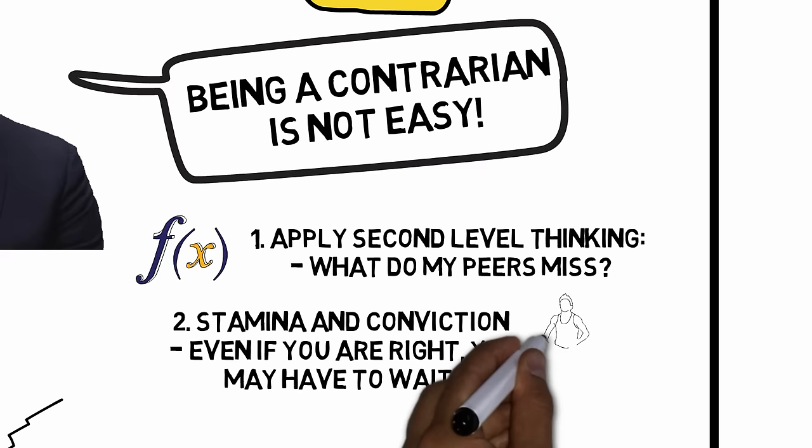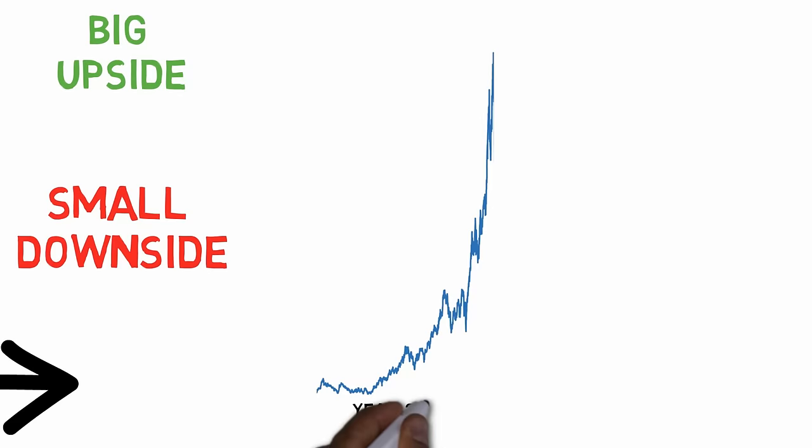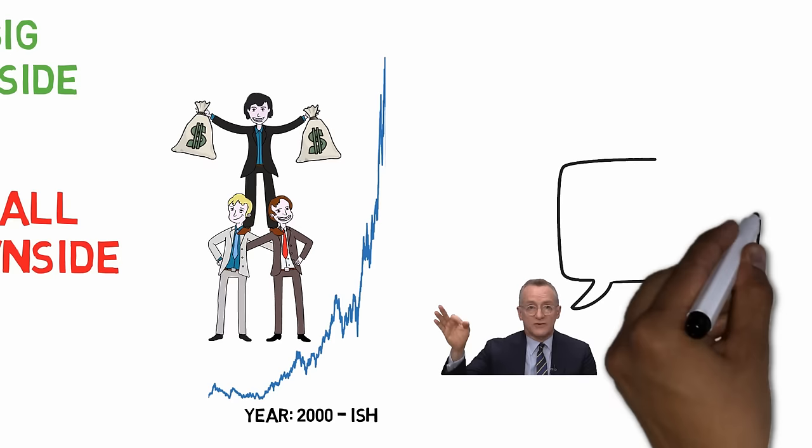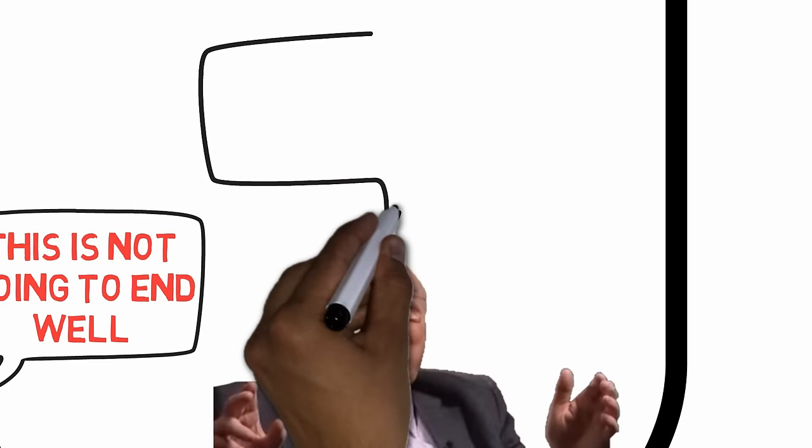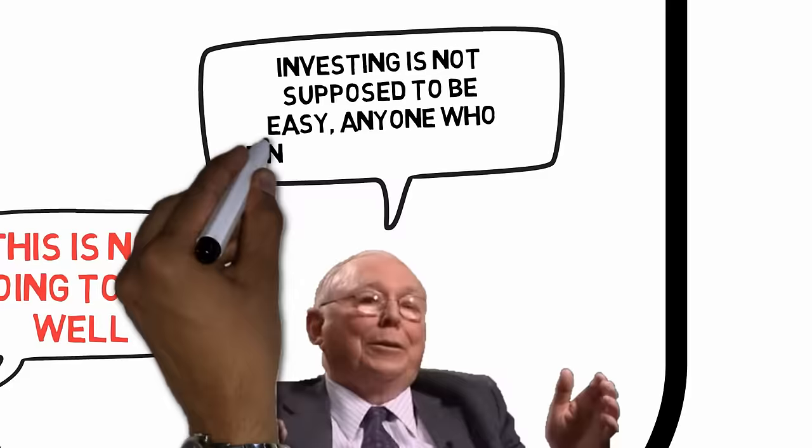So, as an example, while people were making tons of money in the dot-com era, a person like Howard Marks waited on the sidelines, and saw everyone else getting richer at a rapid pace. The effort required to stay out of such a bubble should not be underestimated. As Charlie Munger, Warren Buffett's right-hand man says, investing is not supposed to be easy. Anyone who finds it easy is stupid.